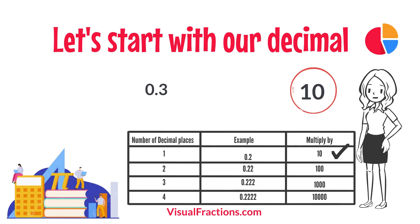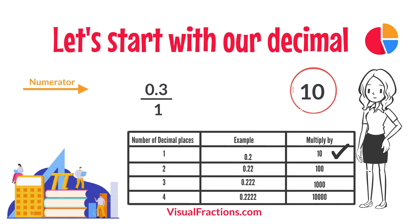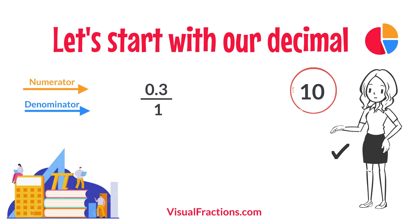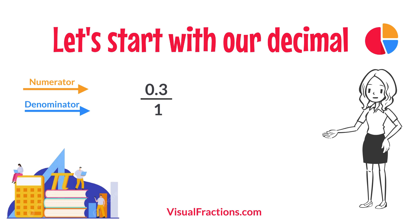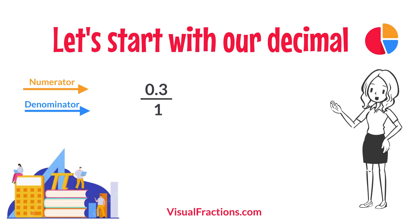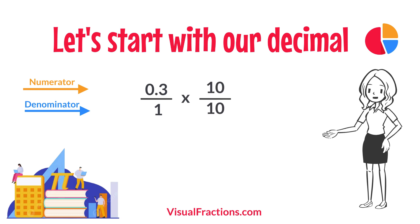To convert this decimal into a fraction, you initially put it over 1, essentially treating the decimal as the numerator in a fraction where the denominator is 1. This sets up the conversion process where we multiply both the numerator, the decimal, and the denominator, 1, by 10 because there is one decimal place.